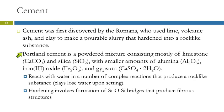Portland cement is a specific type of cement — it has nothing to do with Portland, Oregon. It's a powdered mixture of mostly limestone (calcium carbonate), silica, alumina (Al₂O₃), iron-3 oxide, and gypsum, all mixed together in a specific ratio. When you add water, it undergoes a series of complex reactions that give you a rock-like substance.